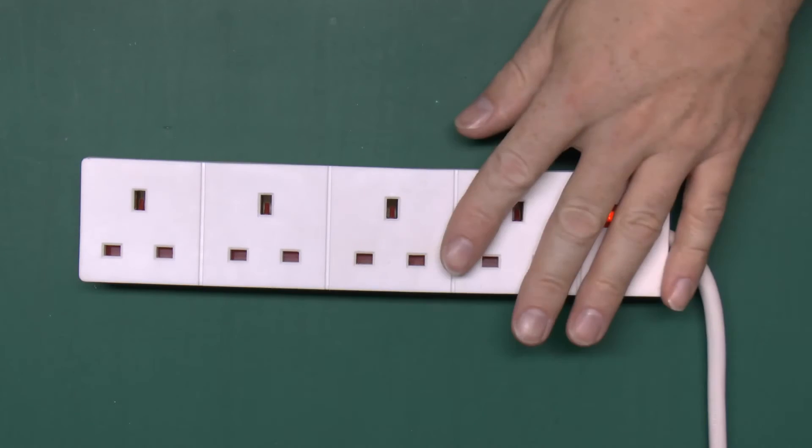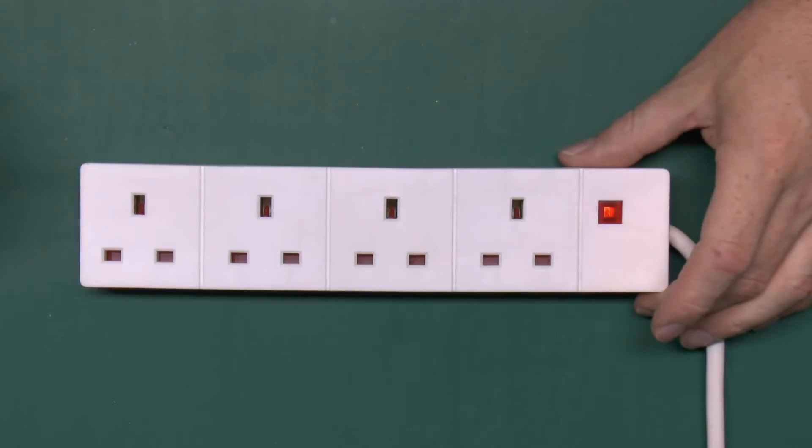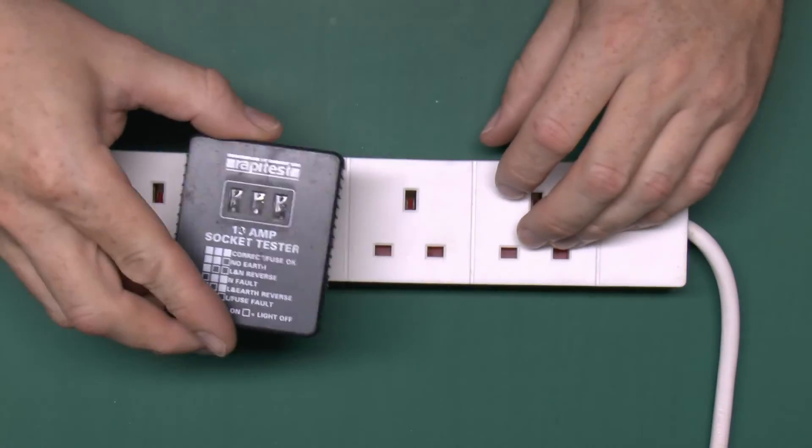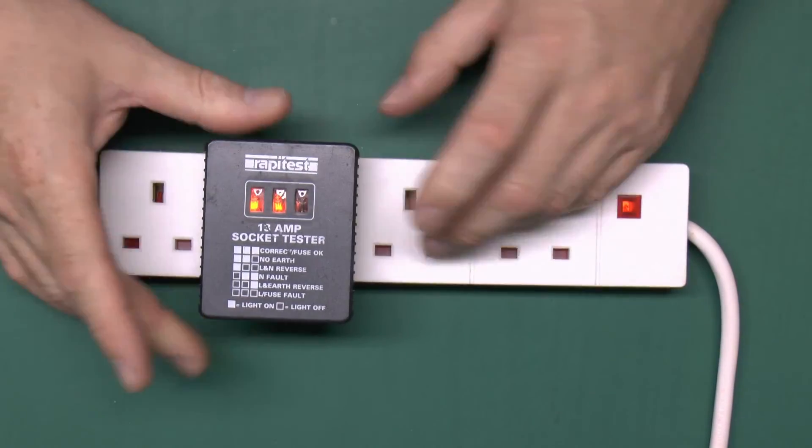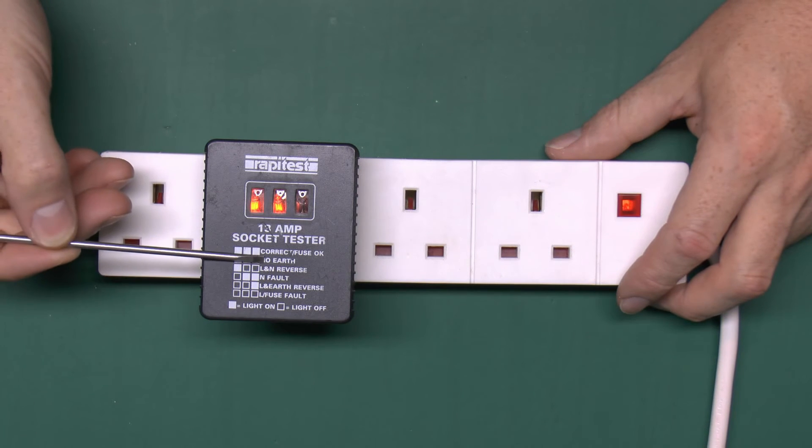Now I've just unplugged this from the mains and plugged it into an isolating transformer, which obviously the indicator here still illuminates, so we've still got power there, so let's see what this thing tells us now. Well there we go, we've only got two lights on, which according to the legend here means there's no earth.